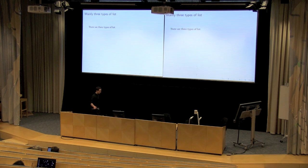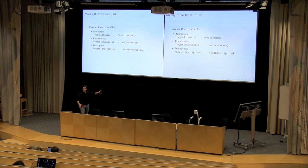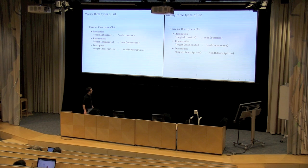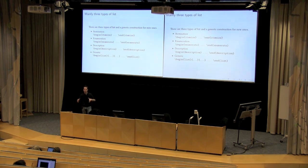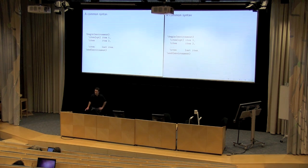About lists: there are mainly three types — itemize, enumerate, and description. Each is an environment. You know how to use an environment, and we'll see how to produce items inside these environments. There is also a generic construction which can produce new types of lists, but that's somewhat difficult. It's well documented and you can find everything on the web.